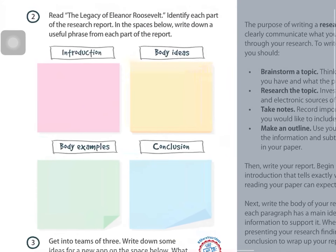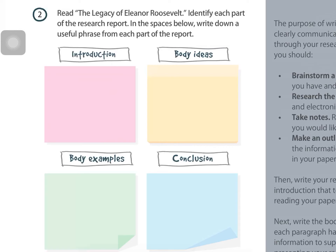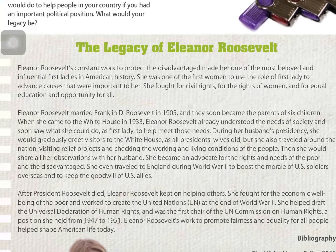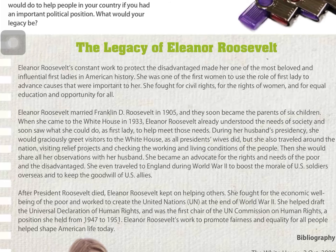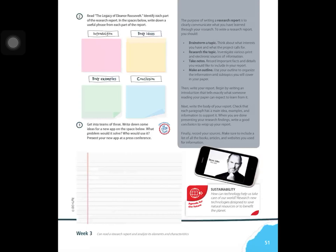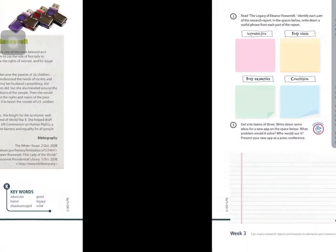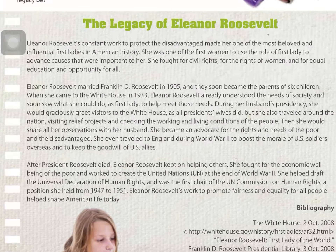On page 51, exercises 2 and 3: read 'The Legacy of Eleanor Roosevelt' from the previous page, identify each part of the research report, and write down a useful phrase from each part — introduction, body ideas, body examples, and conclusion. The introduction is at the beginning of the text. The body ideas and body examples are in the middle paragraphs.